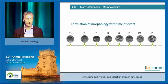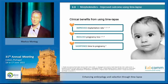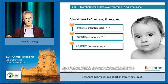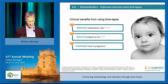So we can correlate all these timings with events, correlate them with development, and start to use this information to improve how we perform embryology. There are now many publications — retrospective studies, prospective studies, and randomized controlled trials — all going more or less in the same direction: improved implantation rate, reduced pregnancy loss rate, which is now appearing in several papers, and altogether a shorter time to pregnancy.